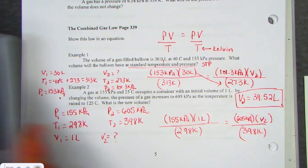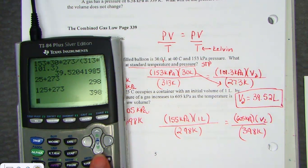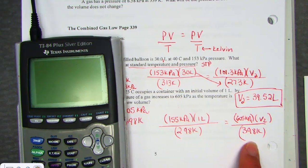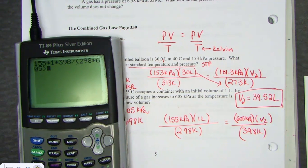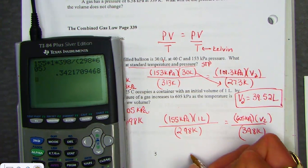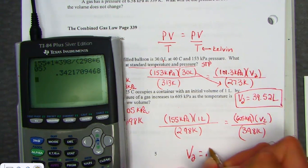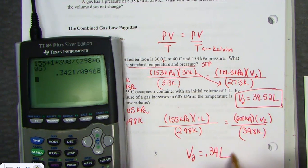So same target, we're going to pull out for V2. And key sequence, we just cross-multiply the side that does not have the variable first. So I hit 155 times 1 times 398. I'm going to divide by the product of 298 and 605 in a parenthesis. Our new volume, 0.34 liters.